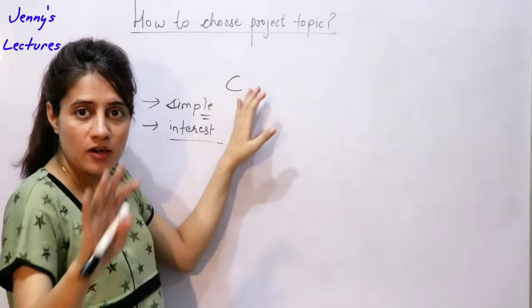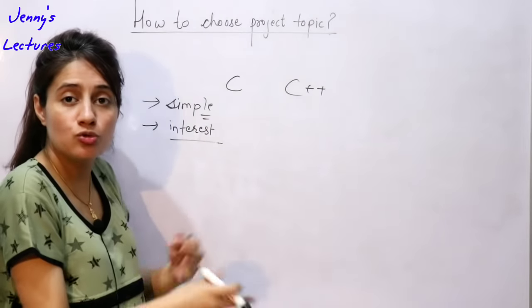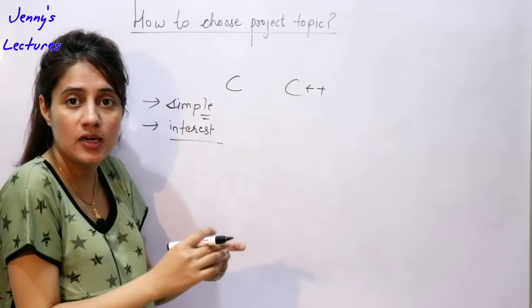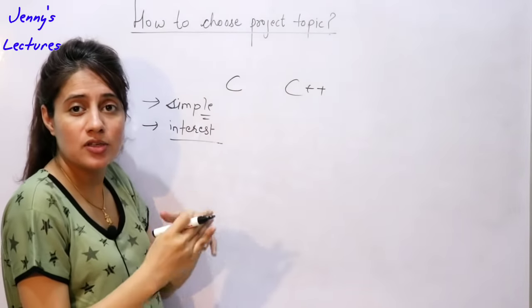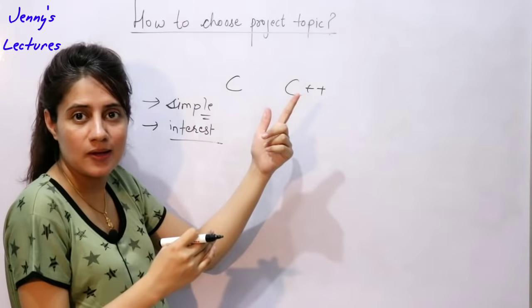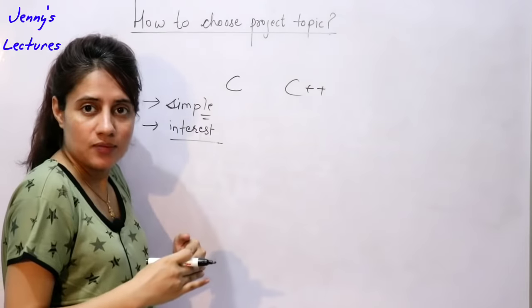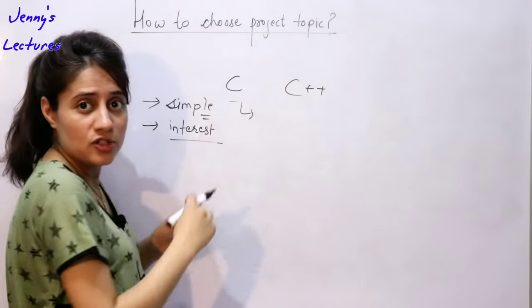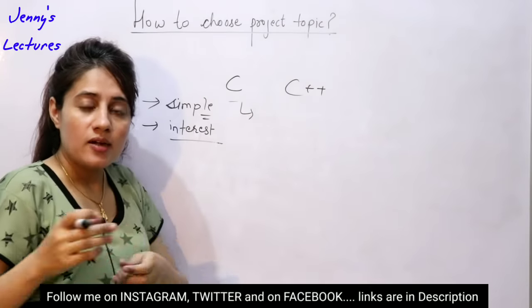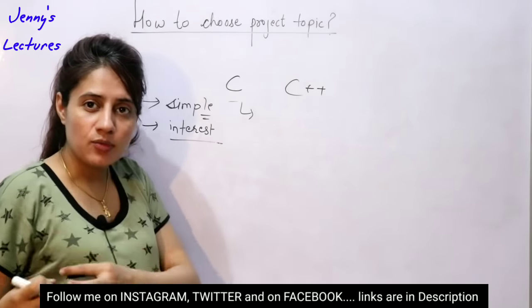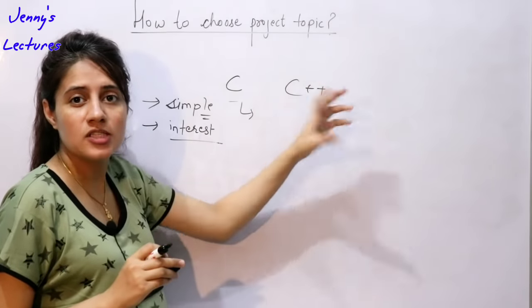First, start working on C language and make a project. Then move to C++ and make a project using more features like file handling. You have to apply active learning here — once you learn file handling, start implementing it in your project: saving files, fetching data from files. Then apply OOP concepts and start making a project in C++.